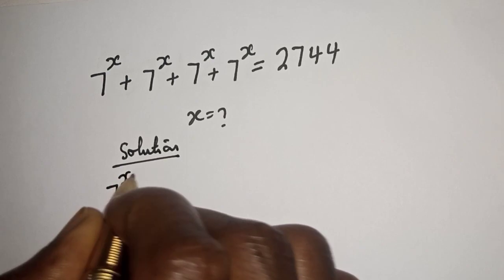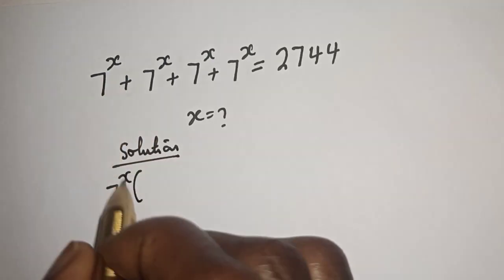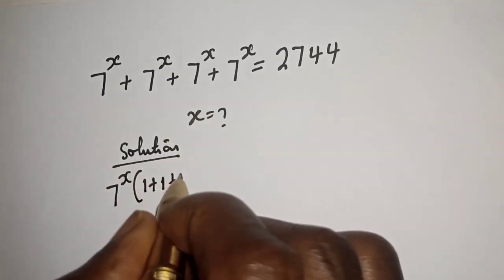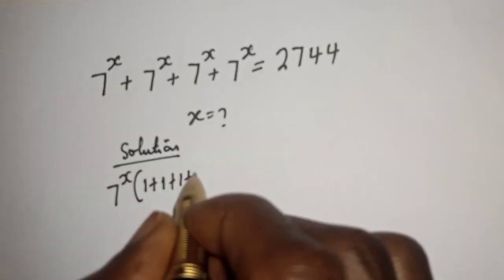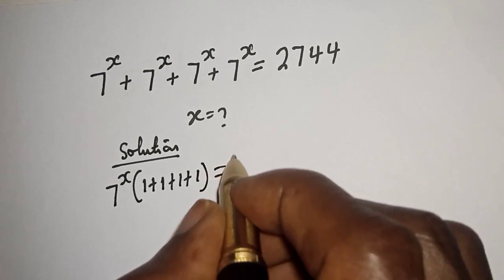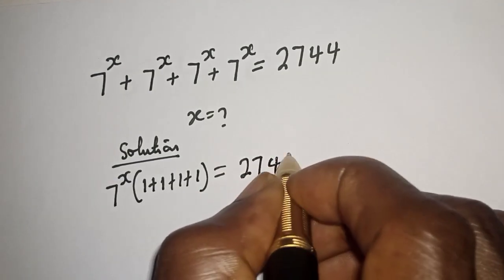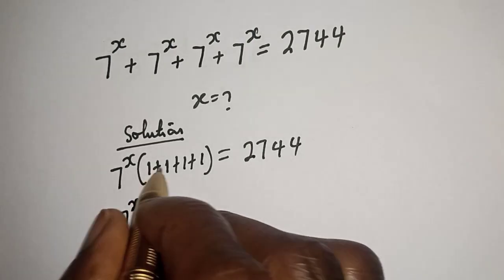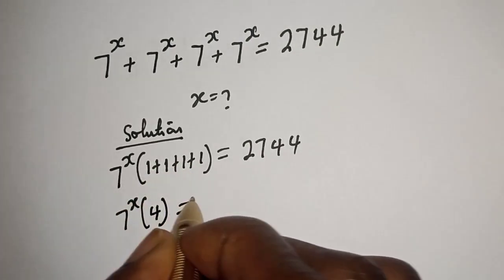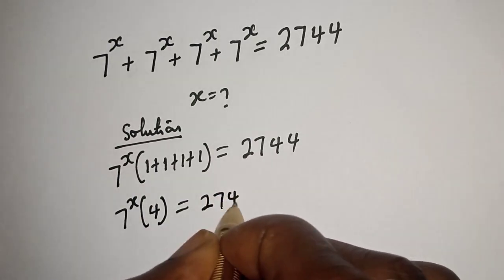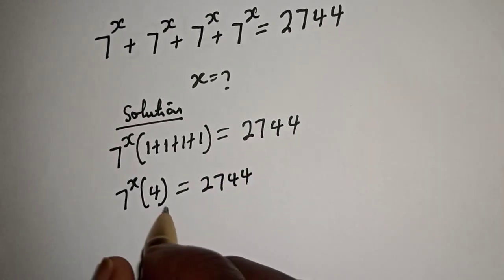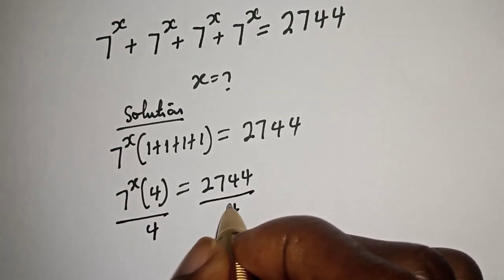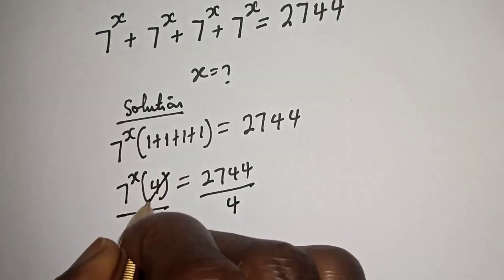Solution: we have 7 raised to power s common from the left hand side. Let's bring out 7 raised to power s — this divided by this, plus this divided by this, plus this divided by this, plus this divided by this — is equal to 2744. Then 7 raised to power s, bracket 1 plus 1 plus 1 plus 1, that is 4, is equal to 2744.